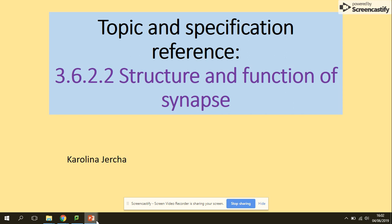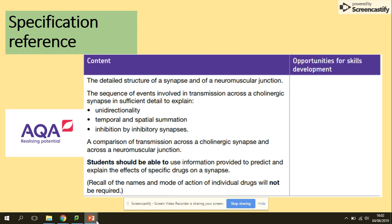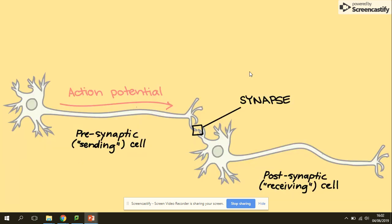Welcome to the Structure and Function of Synapses Part One video. In terms of the specification, we will be looking at the structure of the synapse. The neuromuscular junction was done in the video on muscles, so if you would like to recap, visit those videos. We will also be looking at the transmission across the synapse — how the action potential will travel from the presynaptic neuron membrane through the synapse to the postsynaptic neuron membrane.